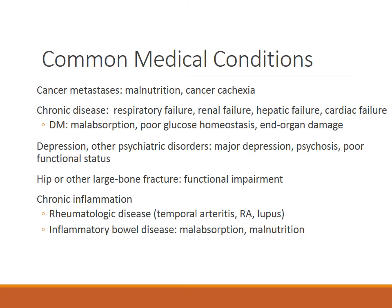With diabetes you can have poor glucose homeostasis and end organ damage. Depression or any psychiatric disorder can affect functional and nutritional status. Hip or other large bone fractures can impair functional ability and result in poor nutrition. Chronic inflammation with rheumatological diseases or inflammatory bowel disease can affect absorption and nutrition. Previous GI surgery can affect malabsorption and malnutrition. Chronic infection — any recurrent UTI, pneumonia, or TB — can affect functional ability. Stroke is another common condition where you can see geriatric failure to thrive, with swallowing problems, depression due to loss of function, and cognitive deficits.